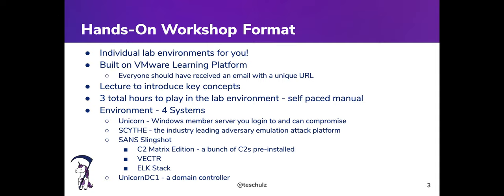We've also installed Vector in the Slingshot VM, which we'll be covering in the lab. Recently we added ELK as well — that's where we're hosting Elasticsearch and Kibana. So those are the four major things we've got in the lab: SCYTHE, Slingshot with C2 frameworks, Vector, and ELK.